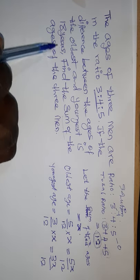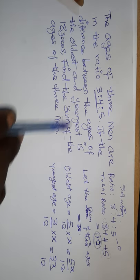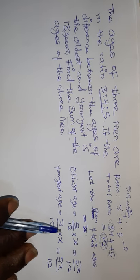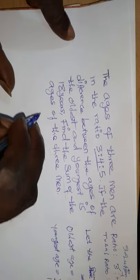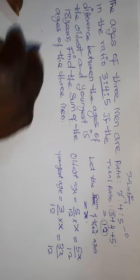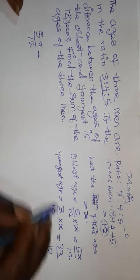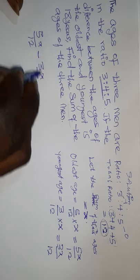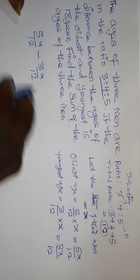We are saying that the difference between the ages of the oldest and the youngest is 18, so we can use that statement to construct an equation. The difference between the ages is 5x over 12 minus 3x over 12. This is the age portion of the oldest, while the second one is the age of the youngest.